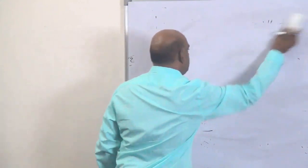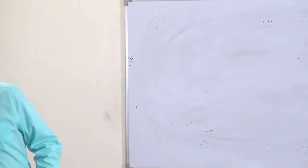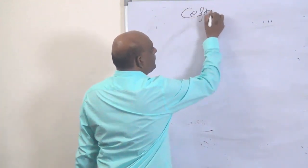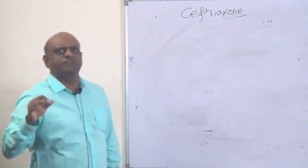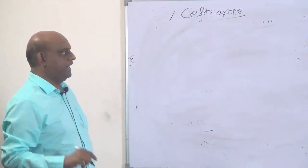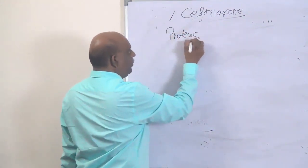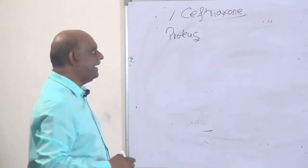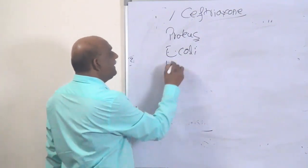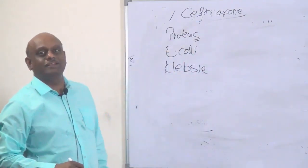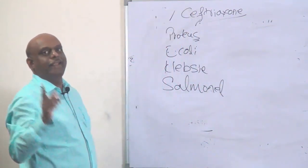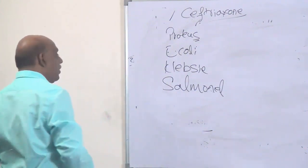Next, a very famous frequently asked question: ceftriaxone. Where do you use ceftriaxone? Remember four conditions: Proteus infections — commonly causing urinary tract infections; E. coli — also involved in UTIs very commonly; Klebsiella — you prefer ceftriaxone as the drug of choice. Do not forget this in tomorrow's exam.